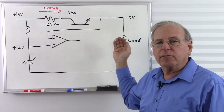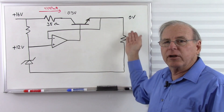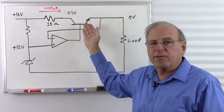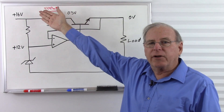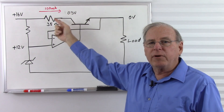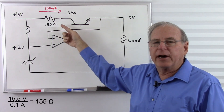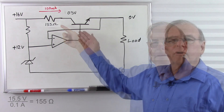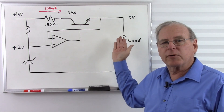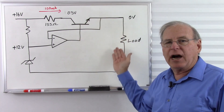What if we want our absolute maximum current to be 100 milliamps? Then we design around the short circuit condition: assume zero resistance and zero volts at the load, 0.5 volts across the transistor — the same conditions we already have. But instead of allowing 400 milliamps, we only want 100 milliamps. What resistor allows 100 milliamps at 15.5 volts? That's going to be about 155 ohms. Before designing this circuit, we have to decide whether to design around a short circuit maximum current or around maintaining voltage up to the maximum current with a higher short circuit current.